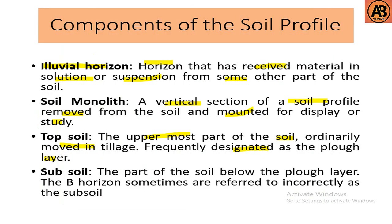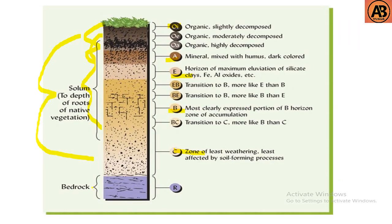Subsoil is the part of the soil below the plow layer. The B horizon is sometimes referred to as subsoil. So the O and A horizons form the topsoil, which is the plow layer, and the E and B horizons below the plow layer form the subsoil.